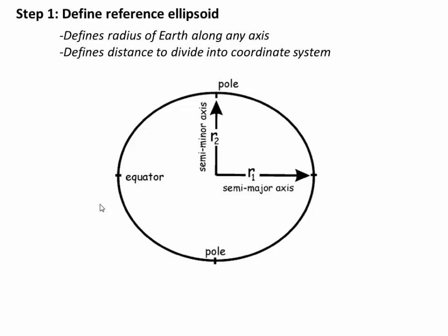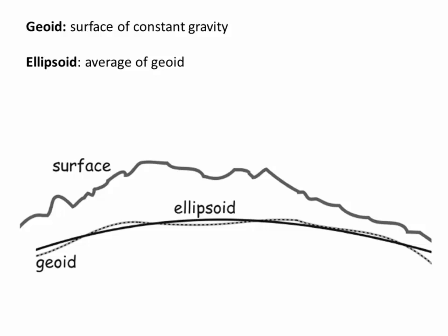If you want to break Earth into a grid of lat/long, the first thing you do is decide what the surface of Earth looks like and agree on that shape. That's done using a reference ellipsoid, which defines the major and minor axis of Earth. The ellipsoid is basically defined by the geoid — an imaginary surface of gravity equipotential, a surface of constant gravity that depends on topography. The ellipsoid is simply the average of that geoid in most cases.